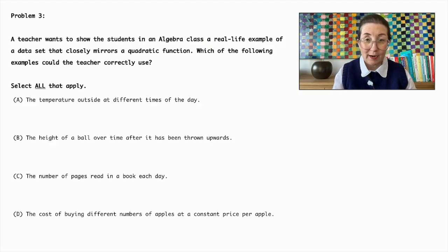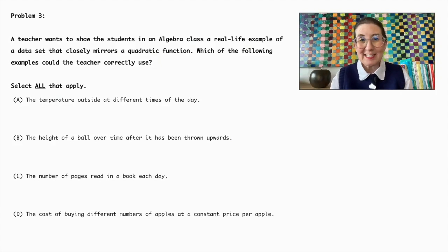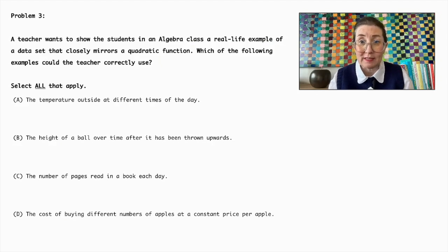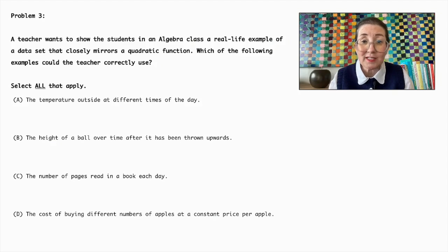Option A refers to the temperature outside at different times of the day. While the temperature might follow a smooth curve, it is better modeled by a sinusoidal function rather than a quadratic function due to its cyclic nature influenced by various environmental factors. Option C involves the number of pages read in a book each day, which would typically be modeled by a linear function or could vary randomly, making it unsuitable as a real-life example of a quadratic function. Option D involves the cost of buying different numbers of apples at a constant price per apple, which represents a linear function as the cost increases proportionally with the number of apples, not quadratically.